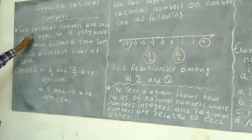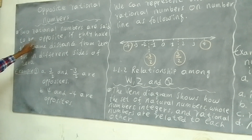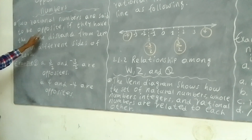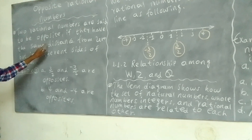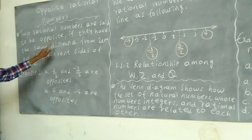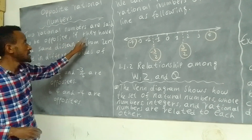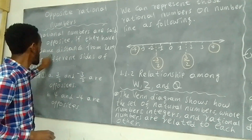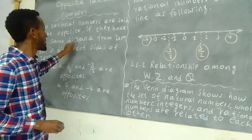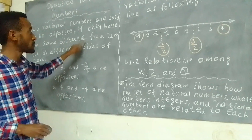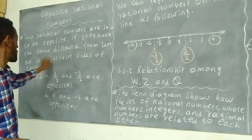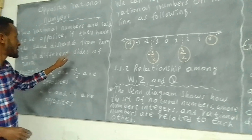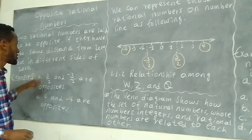Two rational numbers are said to be opposite if they have the same distance from zero, but on different sides of zero.